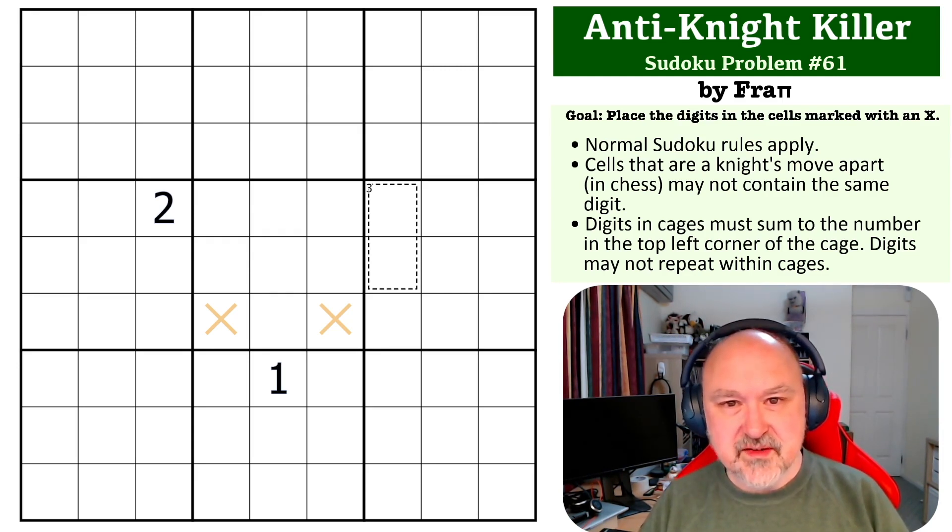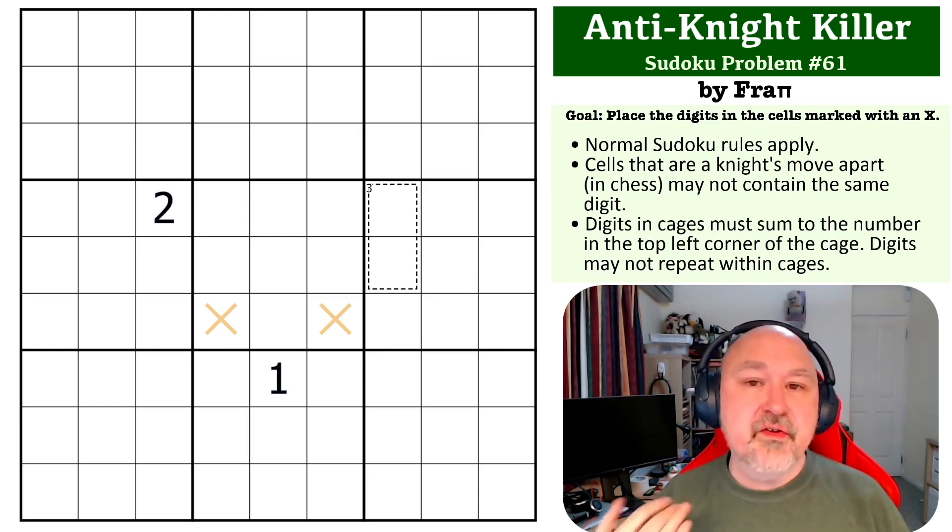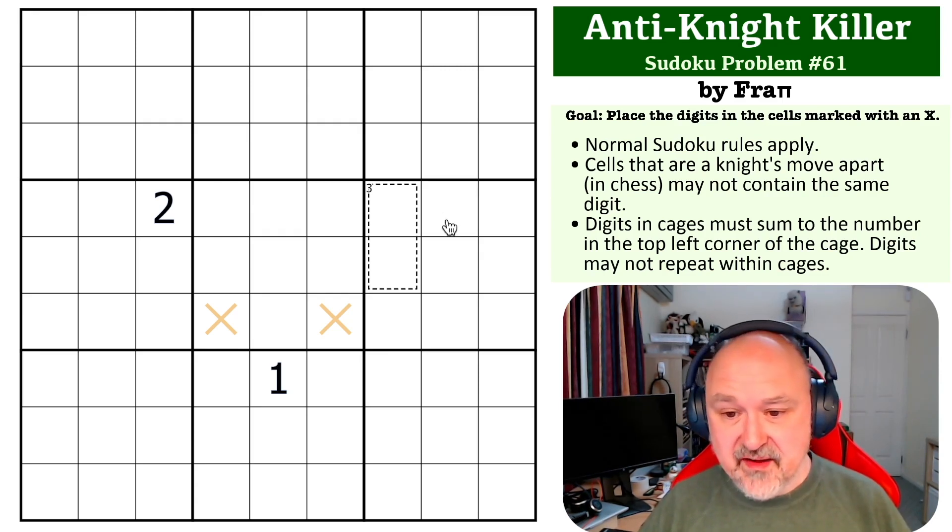The reason it's important to call out not placing digits where there's no X's is this three cage is immediately resolvable. The only way to make up three is with a one-two, and this two immediately resolves it. I can't put a two there, so I can't put a one here - this is a one-two.